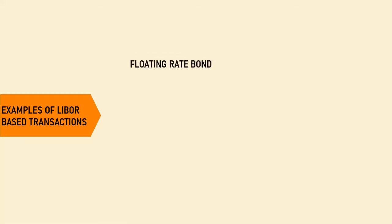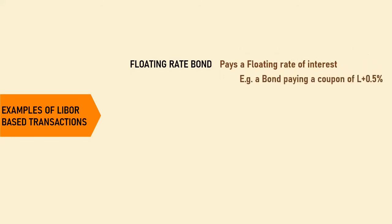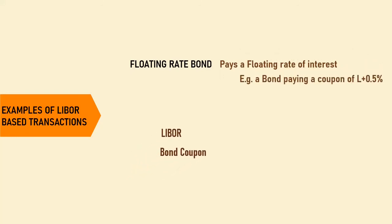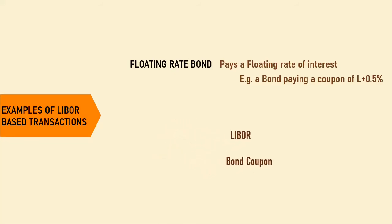Let us now discuss some examples of LIBOR-based products or transactions. The most straightforward example is a floating rate bond which pays an annual interest rate based on LIBOR — say, LIBOR plus 0.5%. As the value of LIBOR changes, the interest payment on the bond will keep changing.